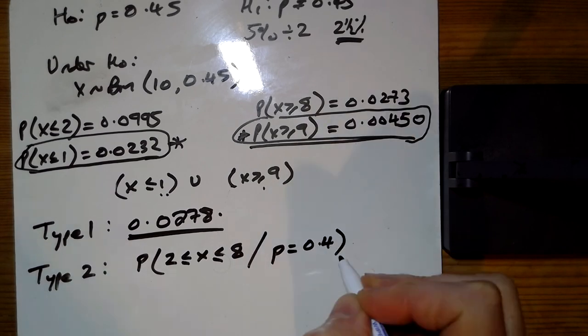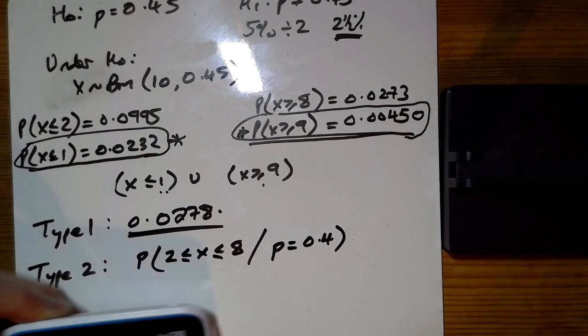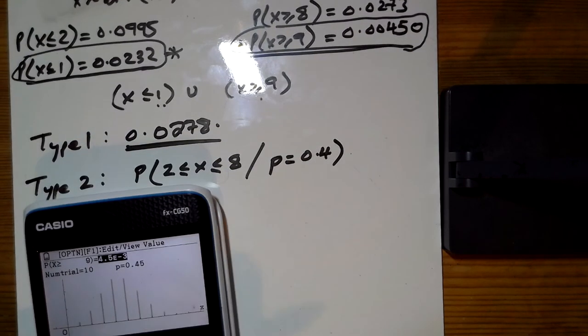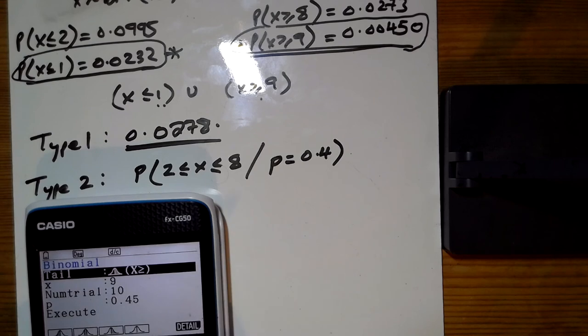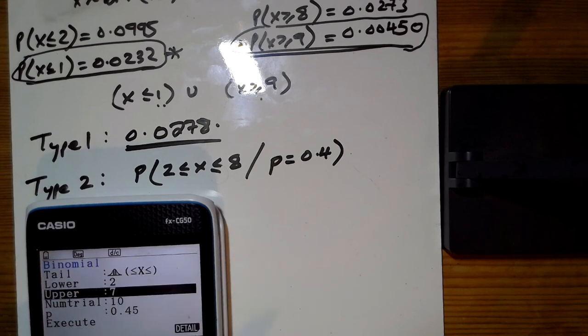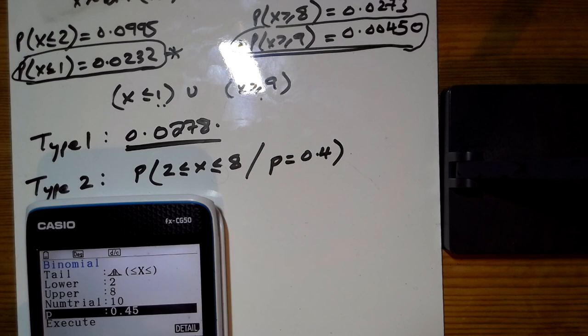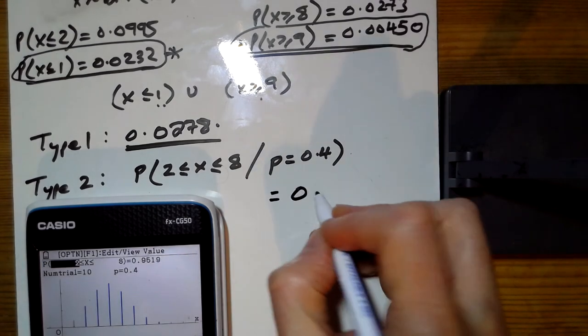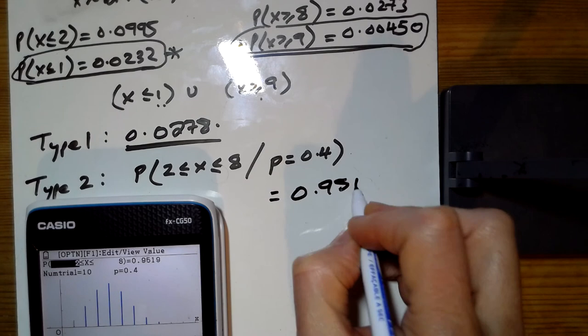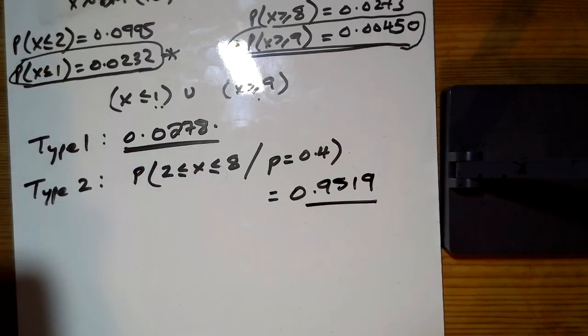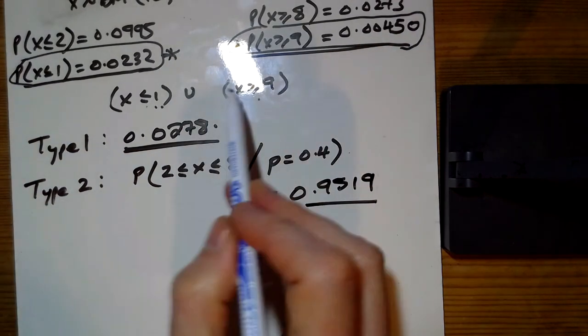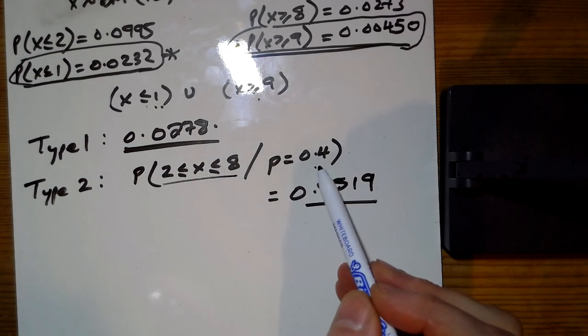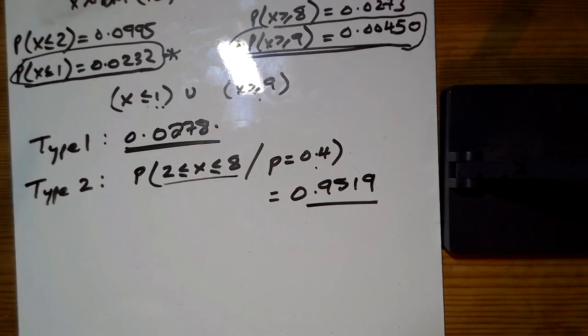So into our distribution menu here then - we've got between 2 and 8 from 10, and actually it wasn't 0.45, it was 0.4, and so this turns out to be 0.9519. So we wanted to keep H0, so not in the critical region, so that's anything from 2 to 8 given that the probability was 0.4.